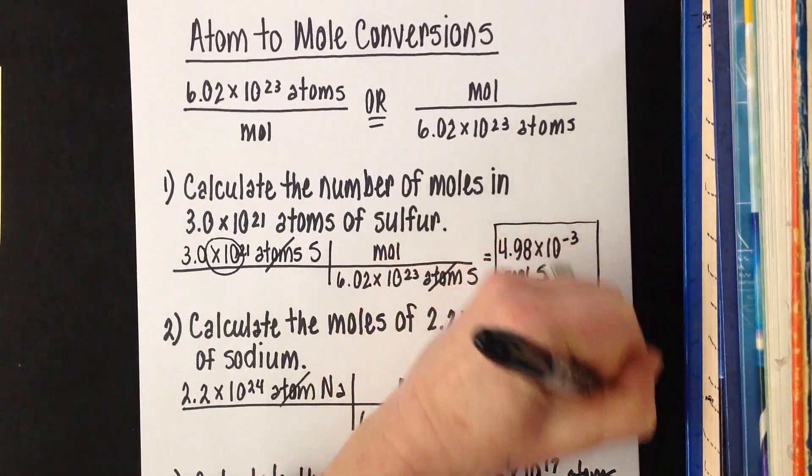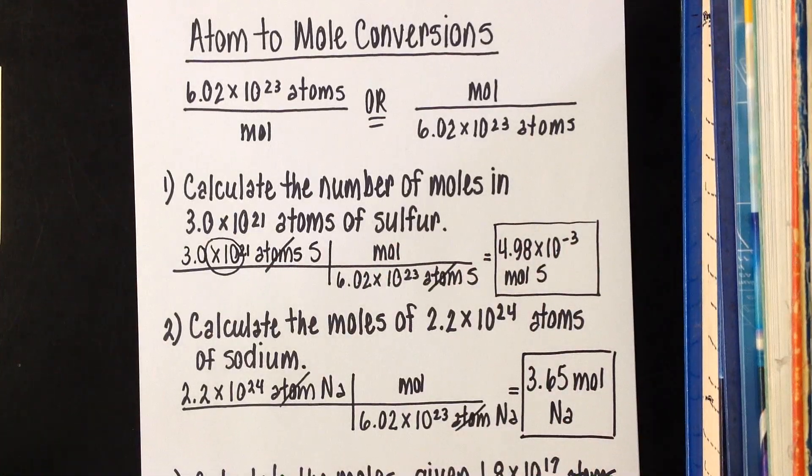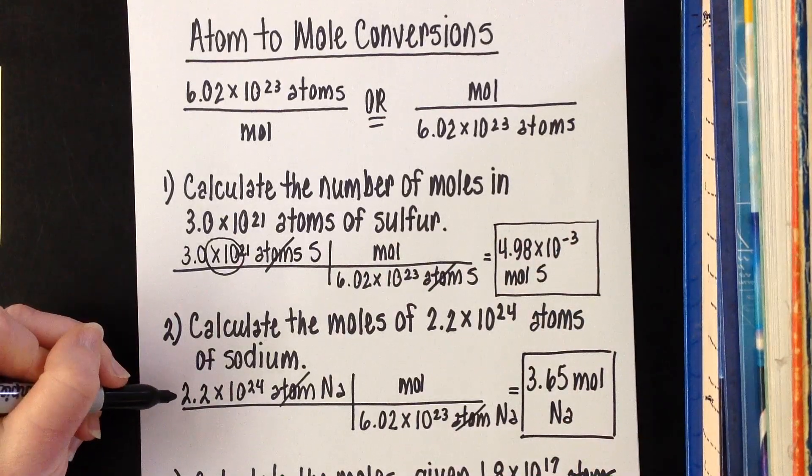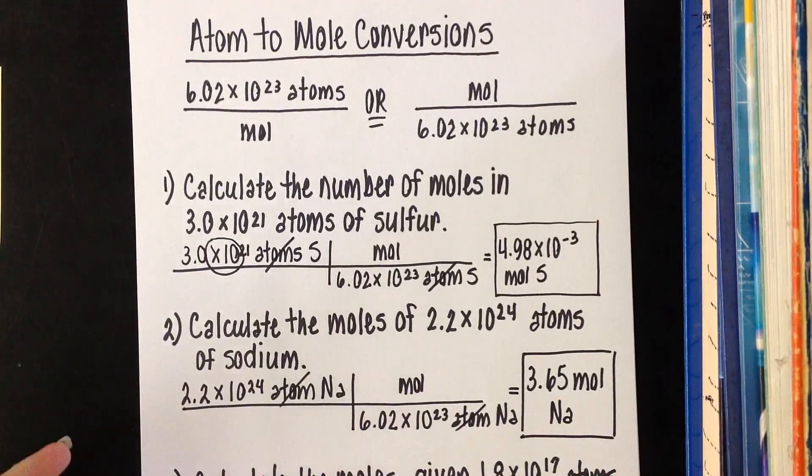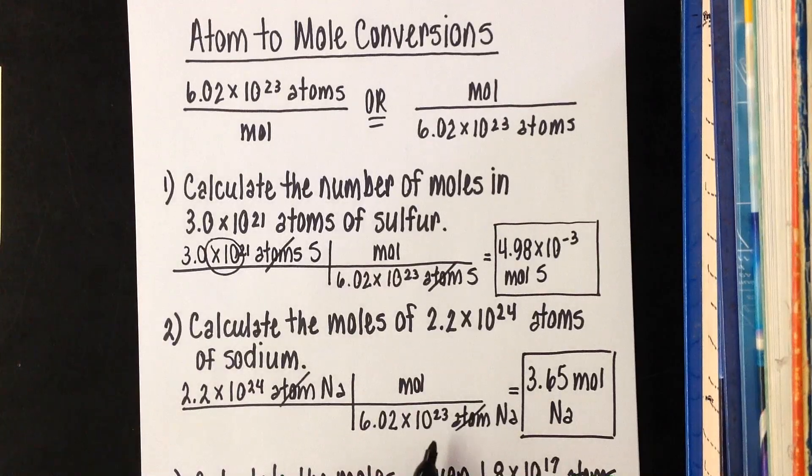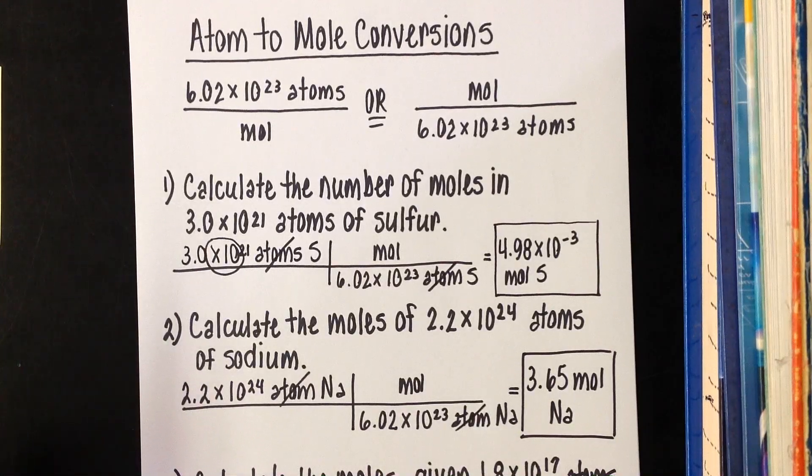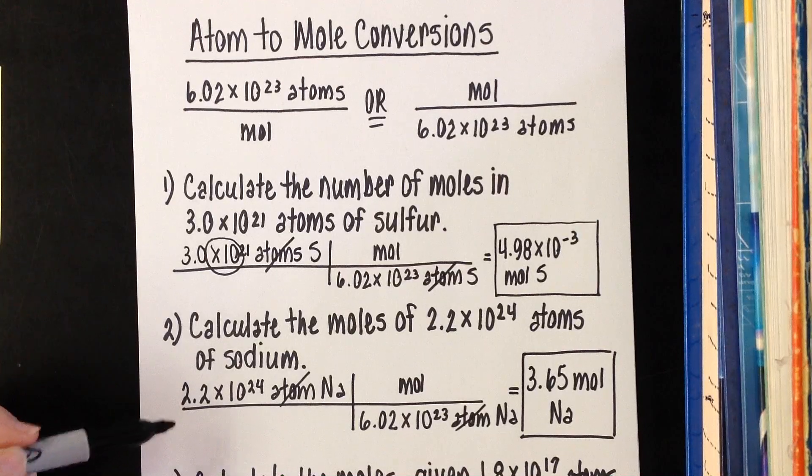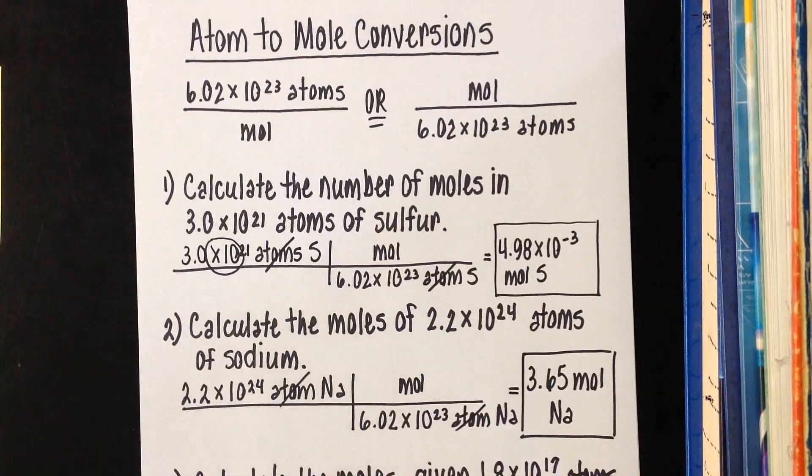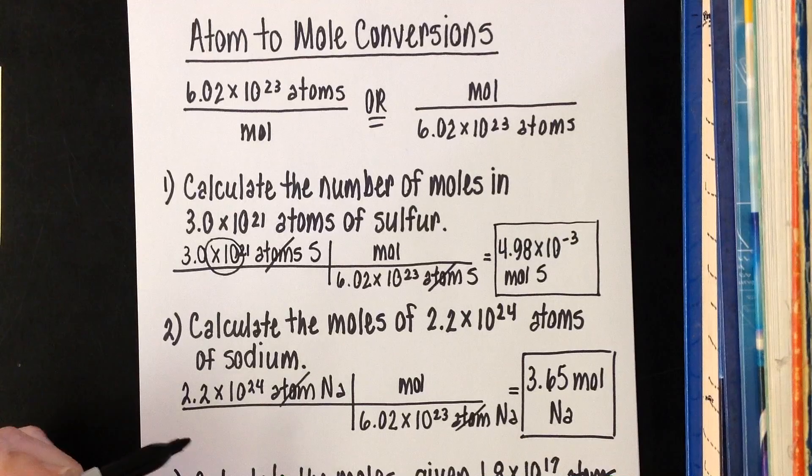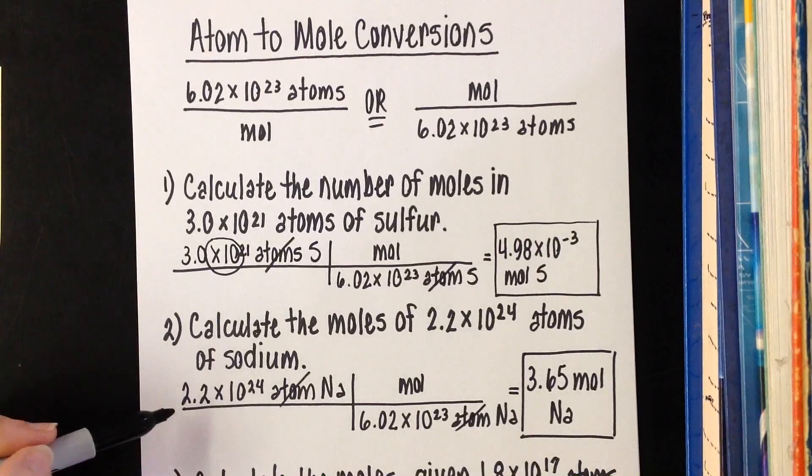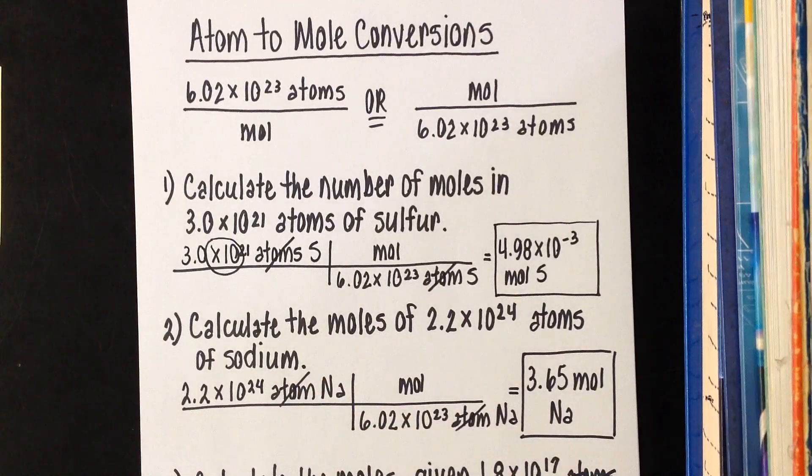You ask yourself, does that answer make sense? It does because we actually have more than a mole. You notice our exponent's 24 here, that's a lot bigger than 6.02 with an exponent of times 10 to the 23rd. So it makes sense this is more than one mole. This is me saying, you've got 48 cookies, how many dozen is that? Well, you know that's going to be more than one dozen because there's only 12 in a dozen. So it makes sense that since this is far more than the amount of one mole, that you're going to have more than one mole of sodium here.